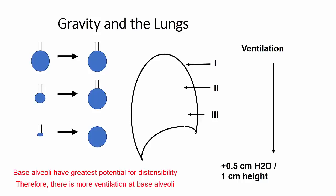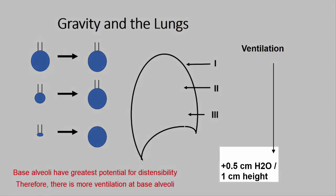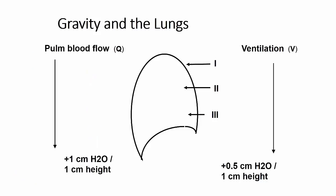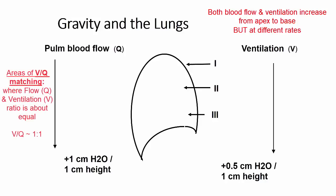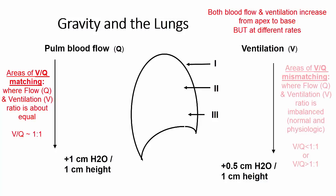The rate of increase in ventilation moving down the lung, however, is less than perfusion. Ventilation increases at a rate of about 0.5 centimeters of water per centimeter of height, whereas blood flow increases at 1 cm of water per cm of height. Both are increasing as we move down the lung, but at different rates. There will be areas of VQ matching, and areas of VQ mismatch where there is excess blood flow or ventilation relative to each other — this is normal physiologic VQ mismatching due to gravity.